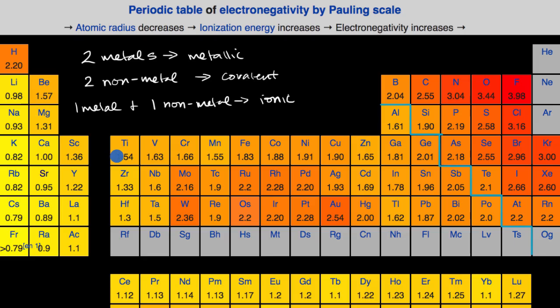What I want to do in this video is to better appreciate that bonding is really more of a spectrum. There are bonds, and we've talked about things like polar covalent bonds, that start to look a little bit more and more ionic in nature. And so that's what we're going to talk about in this video, and think about it in the context of electronegativity.